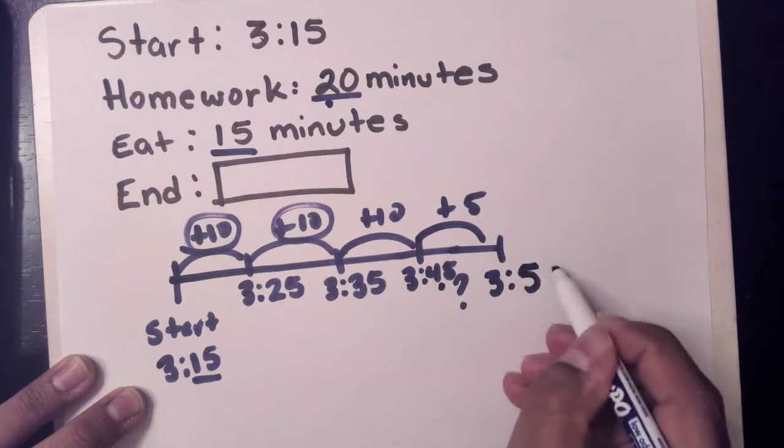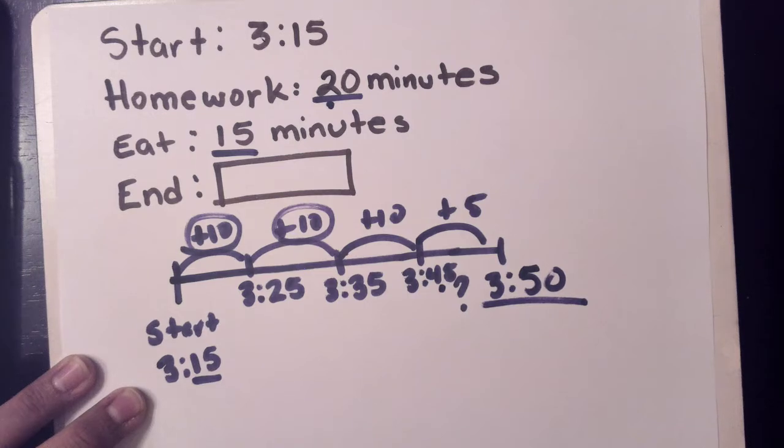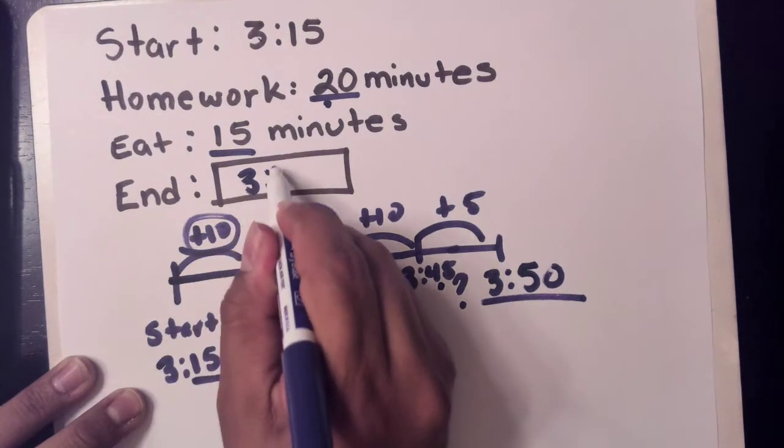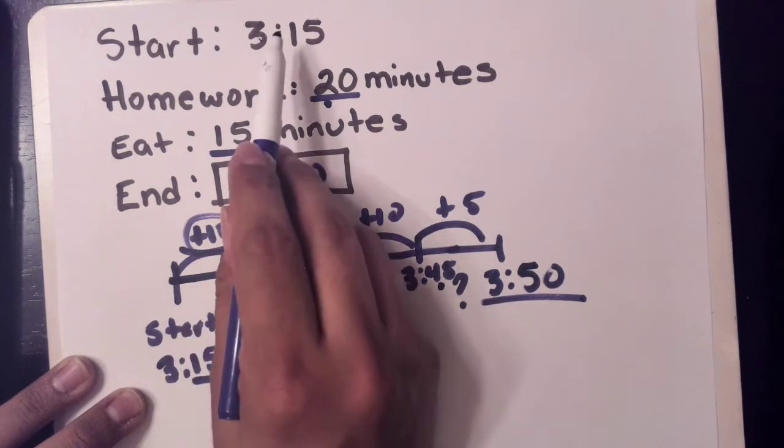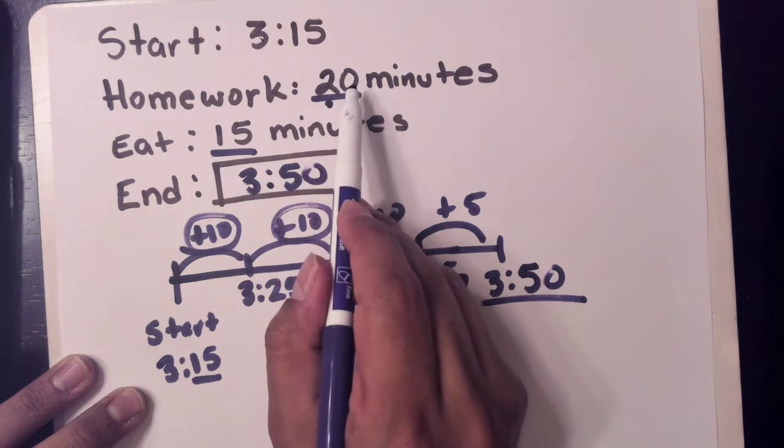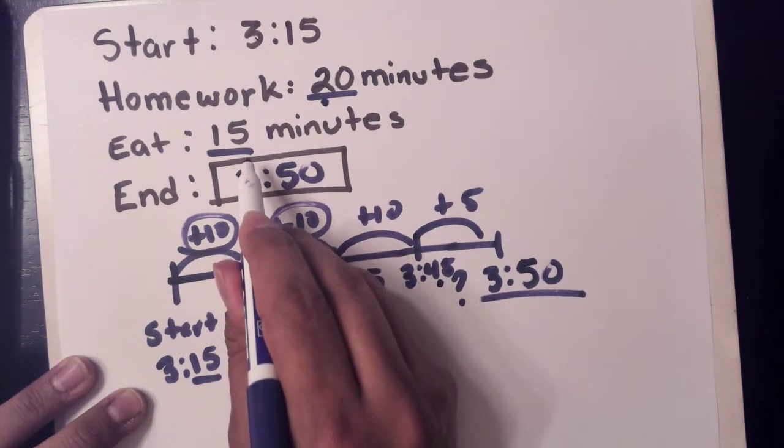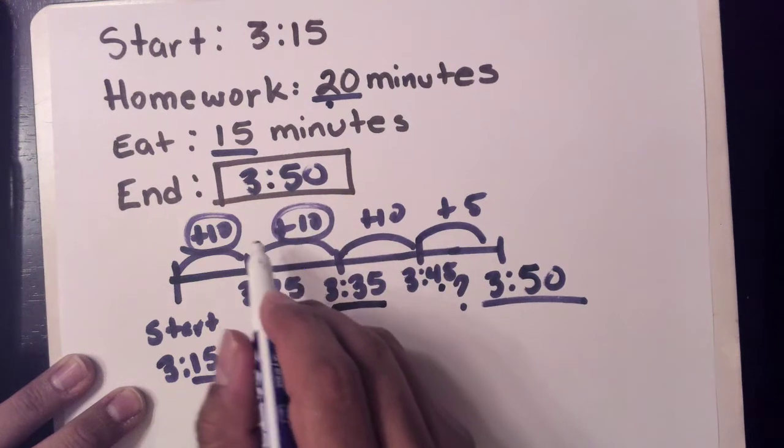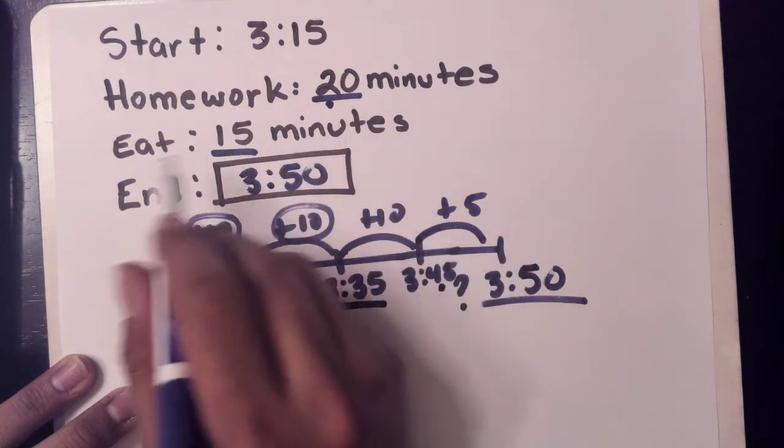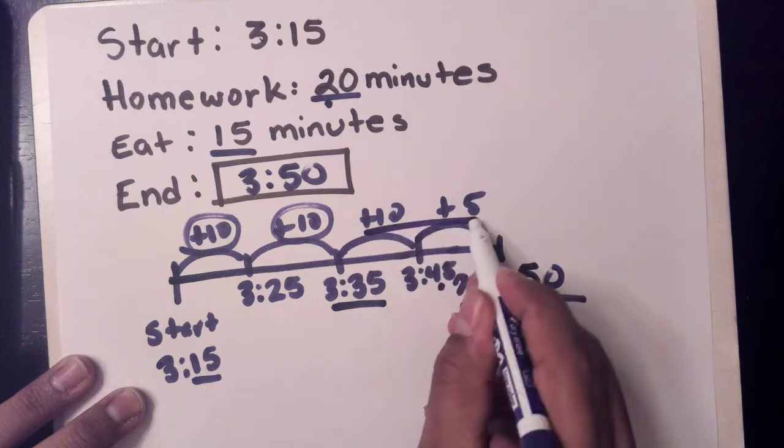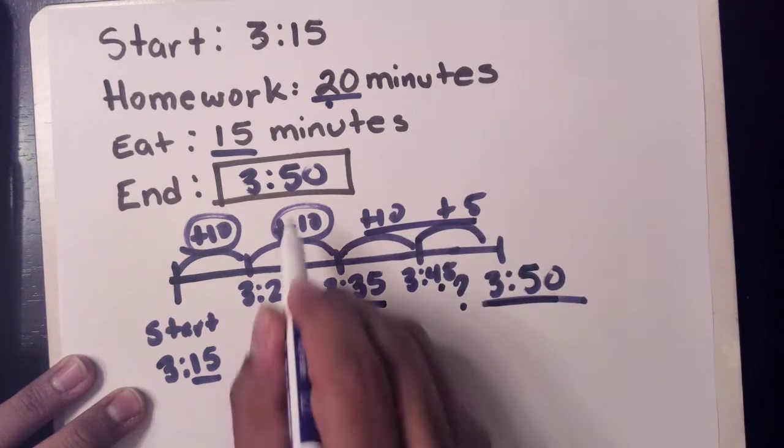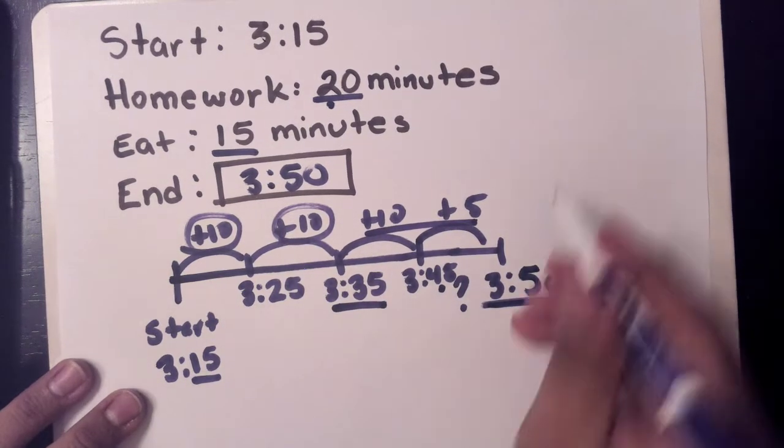So we start at 3:15. 20 minutes to eat, that's 3:35. Plus 15 minutes for homework, 15 minutes to eat, that's 3:50. So we're using addition.